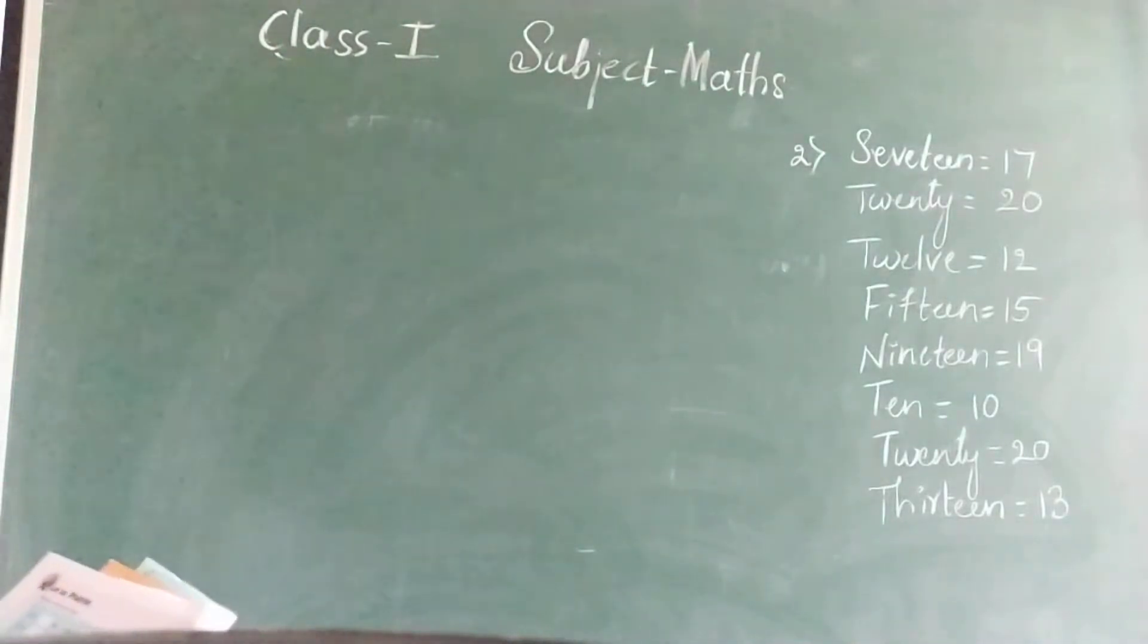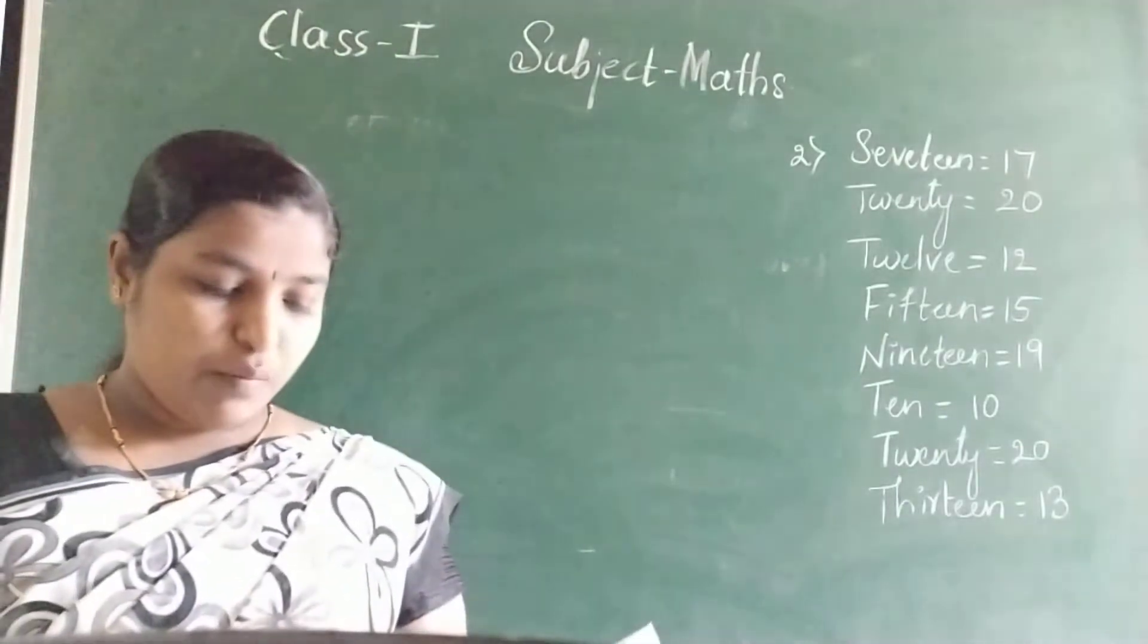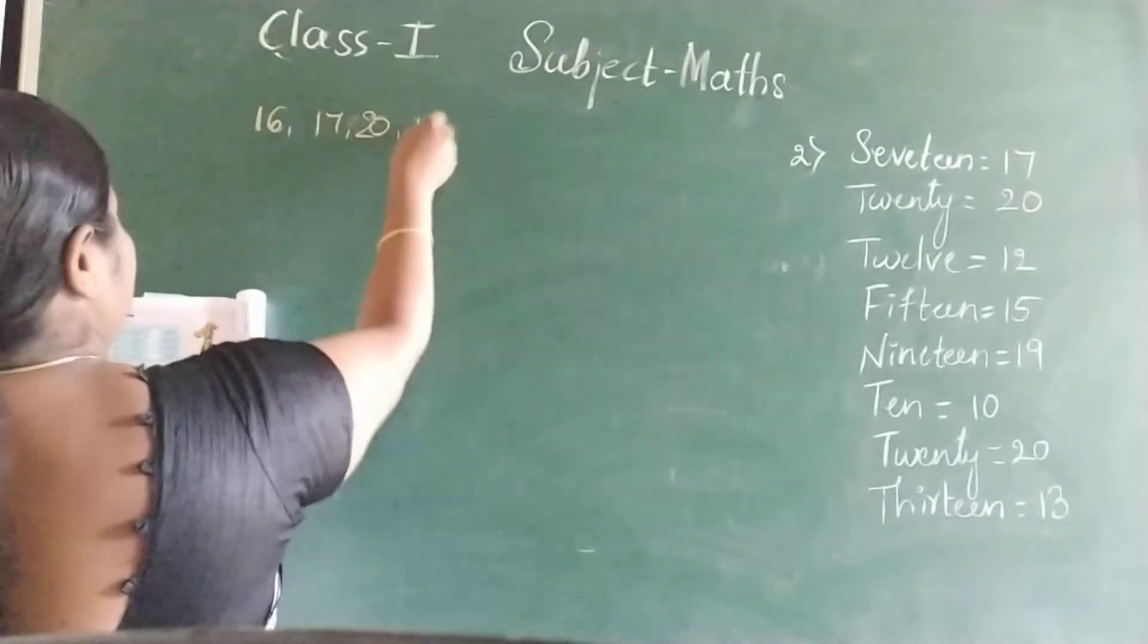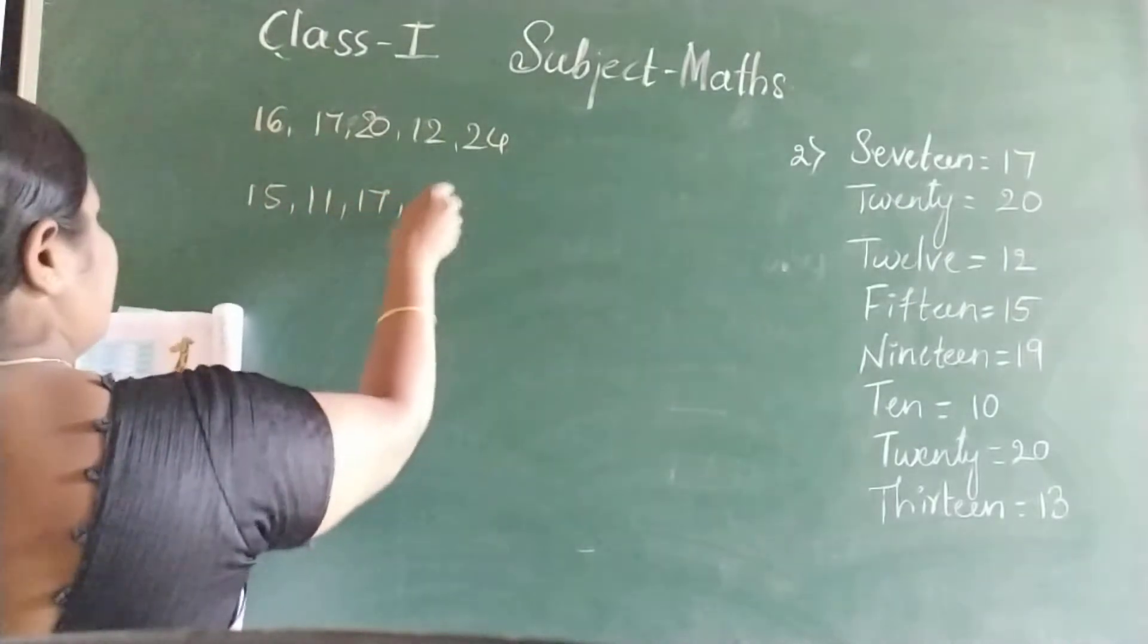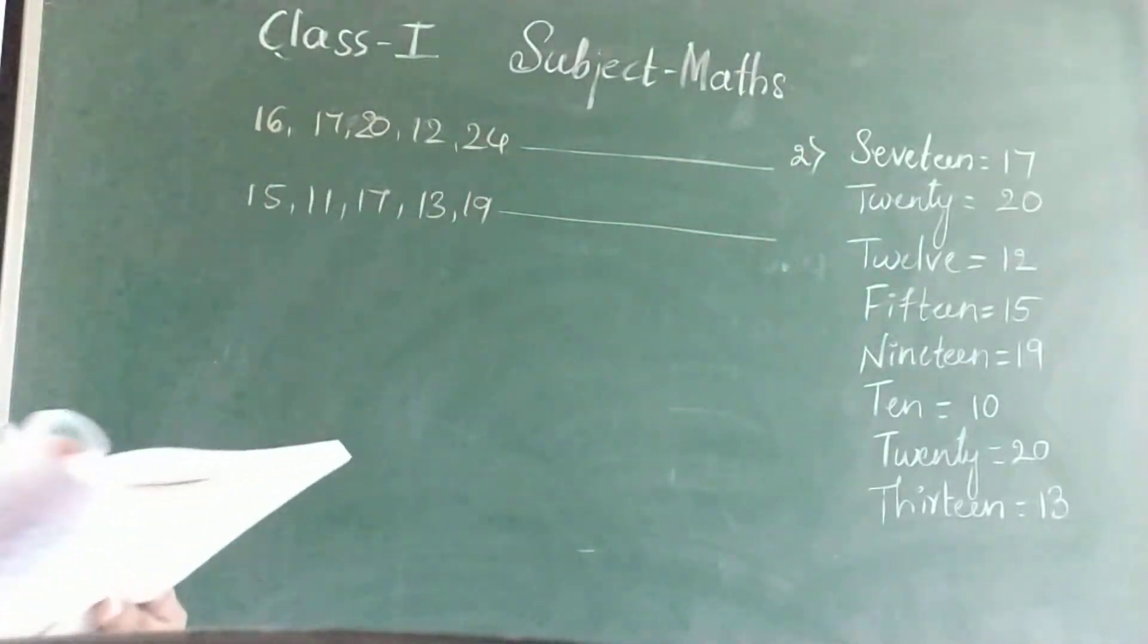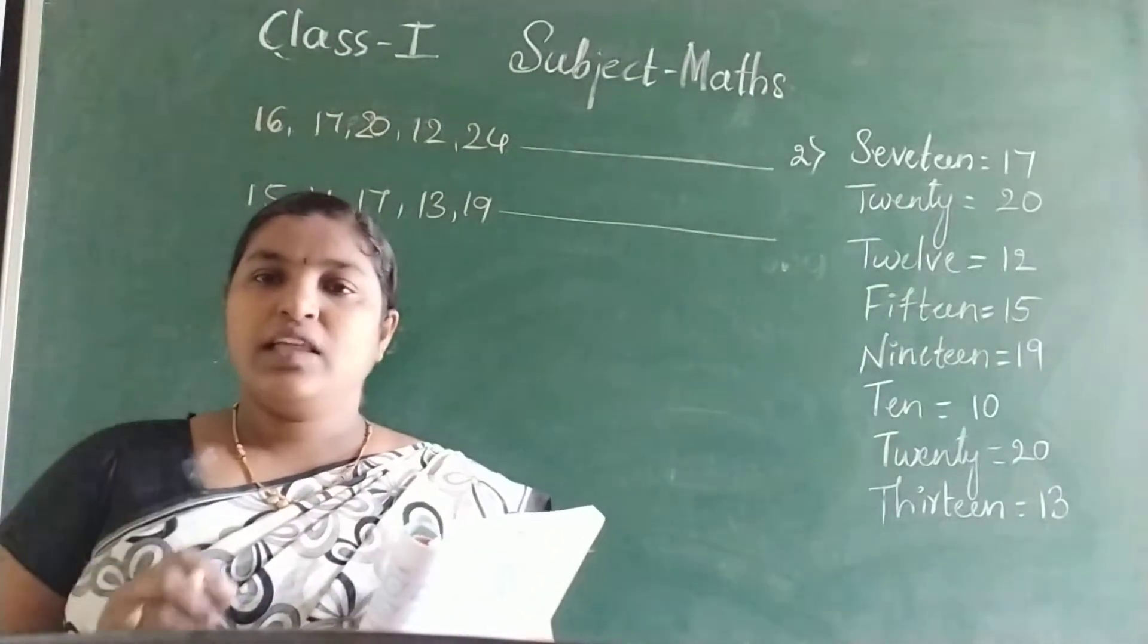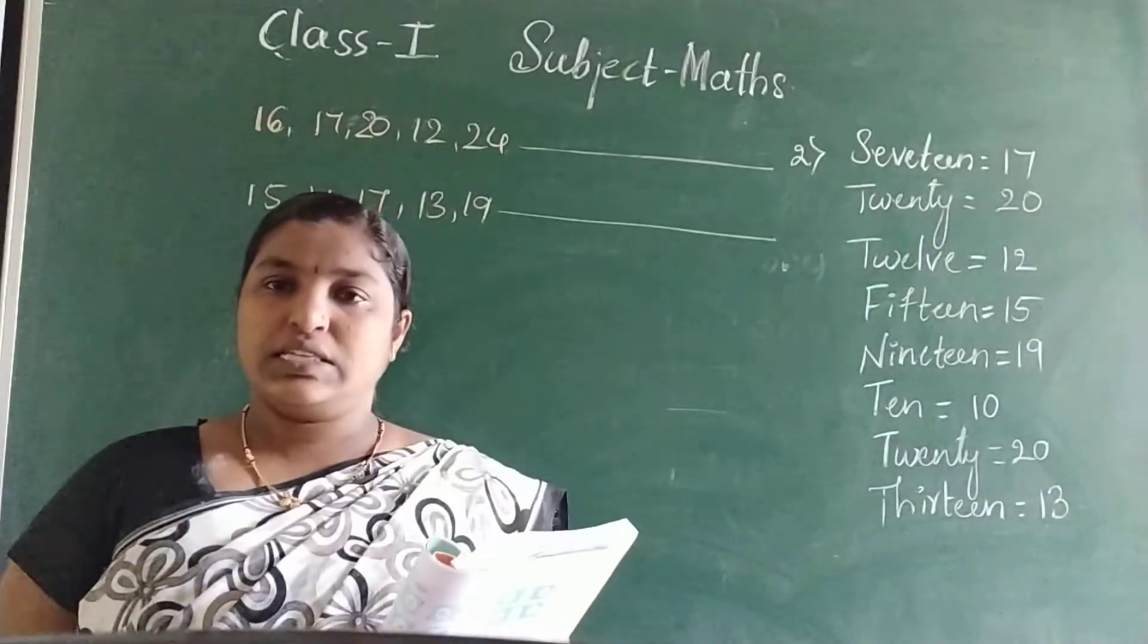Next, question number third. Write the following numbers in ascending order. They have given 4 numbers. 16, 17, 20, 12, 24. Next, 15, 11, 17, 13, 19. What we have to do is write the following numbers in ascending order. What is ascending order? Ascending order is to write the numbers from the lowest or the smallest number to the biggest number.